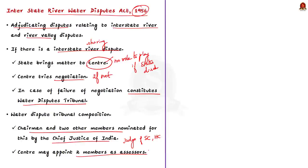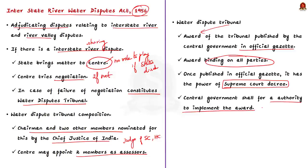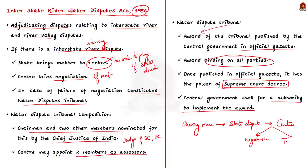The tribunal shall consist of a chairman and two other members nominated by the Chief Justice of India. The chairman and members should be judges of the Supreme Court or High Court. The central government may, in consultation with the tribunal, appoint two or more persons as assessors to advise the tribunal. Once the tribunal pronounces its award, the central government publishes it in the official gazette. The award is binding on all parties and has the power of an order or decree of the Supreme Court. The central government shall then form an authority to implement the award.